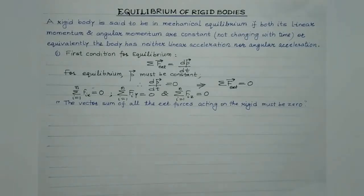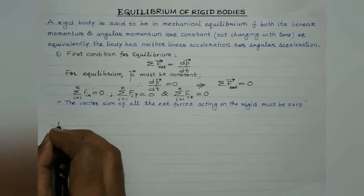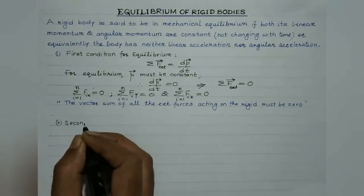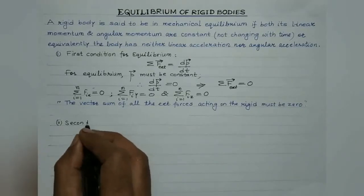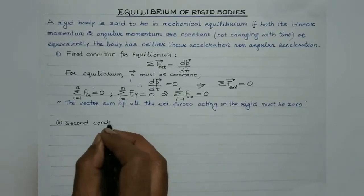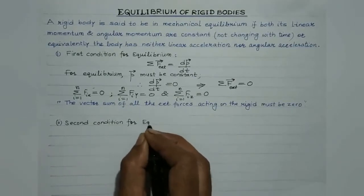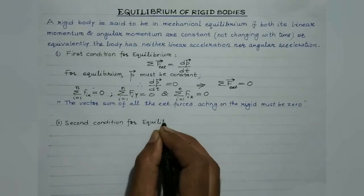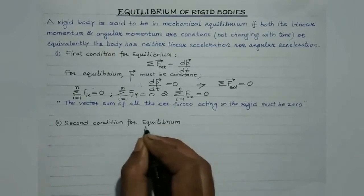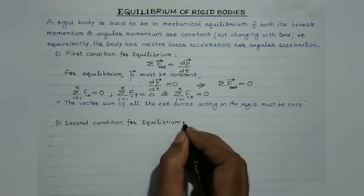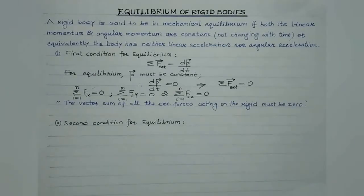Now let us consider the second condition, which involves rotational motion. In rotational motion, in place of force we consider net external torque. The time rate of change in angular momentum is equivalent to the external torque. So in rotational motion, angular momentum plays the same role as linear momentum does in translatory motion.